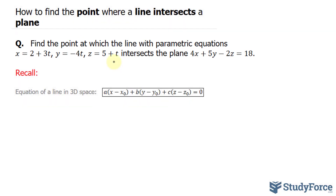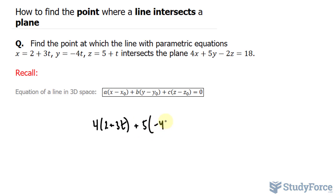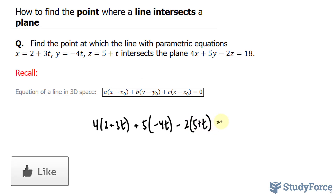To find that point, all we have to do is substitute these equations into where we see x, y, and z. So let me demonstrate. We have 4 times x, which is 2 plus 3t, plus 5 times negative 4t, minus 2 times 5 plus t, is equal to 18. The reason I'm doing this is because now I have an equation that's exclusively in terms of t, and that means I can solve for t.